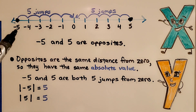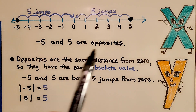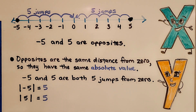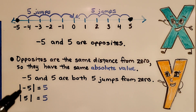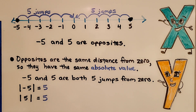Negative 5 and positive 5 are opposites. Opposites are the same distance from 0, so they have the same absolute value. Negative 5 and 5 are both 5 jumps from 0, so the absolute value of negative 5 is 5 and the absolute value of positive 5 is 5 — they are opposites of each other.